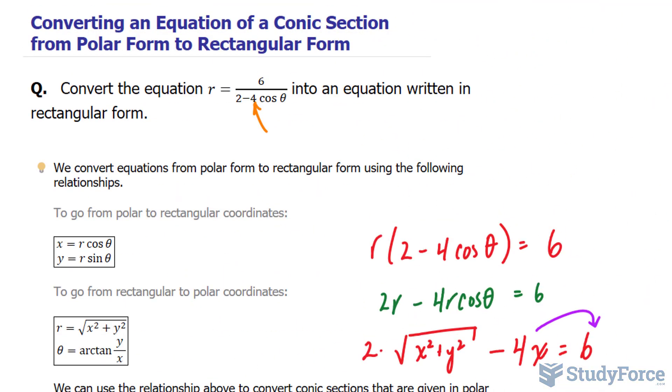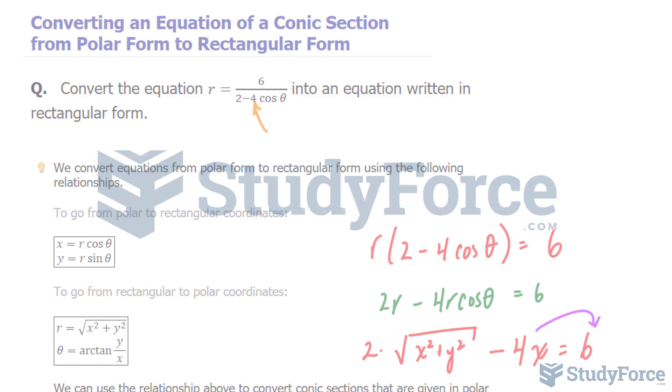And so there you have it. That is how to convert an equation of a conic section from polar form to rectangular form.